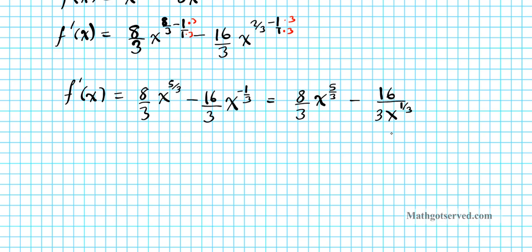So what are critical points? Critical points are where the derivative does not exist and where it is equal to zero. If you notice there is a variable in the denominator, x can assume a value that makes this expression undefined. To make it easier to see, let's combine these two terms into one fraction. The LCD of 3 and 3x^(1/3) is 3x^(1/3), so we multiply the first term top and bottom by x^(1/3).